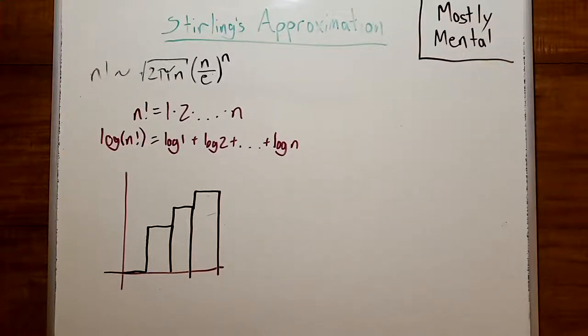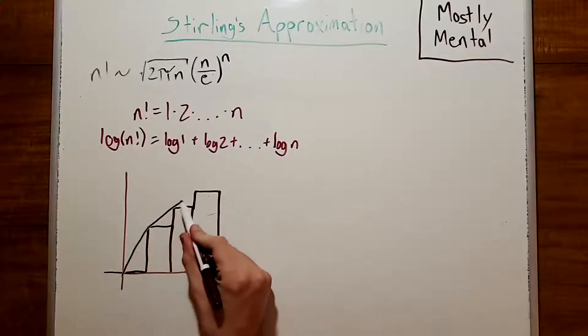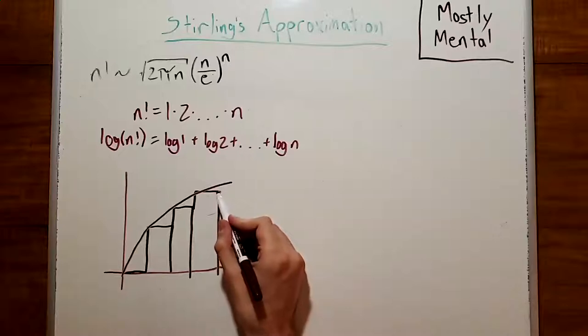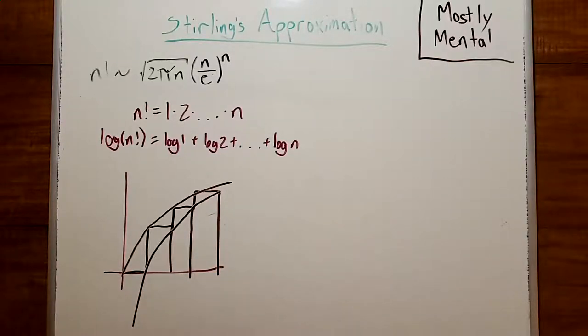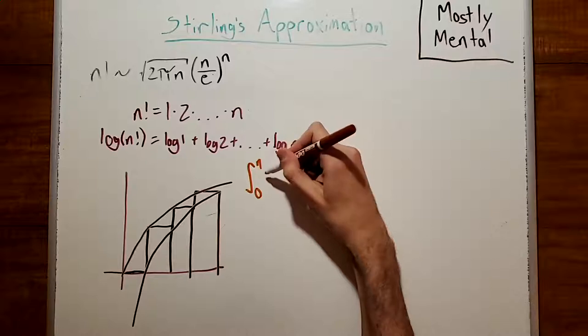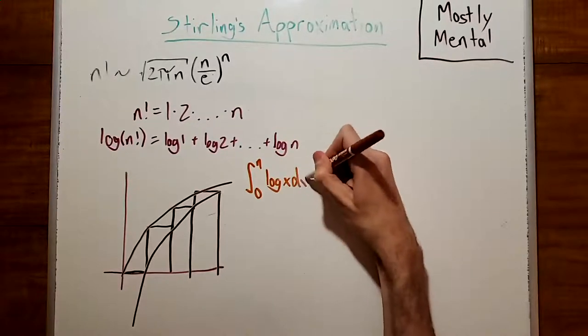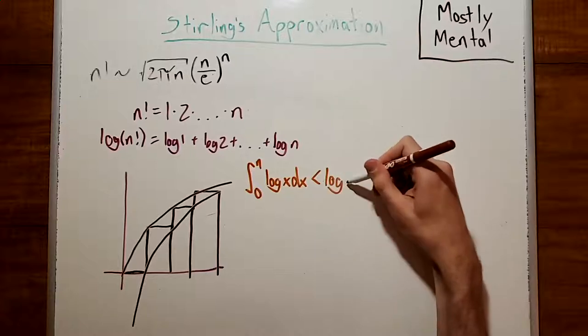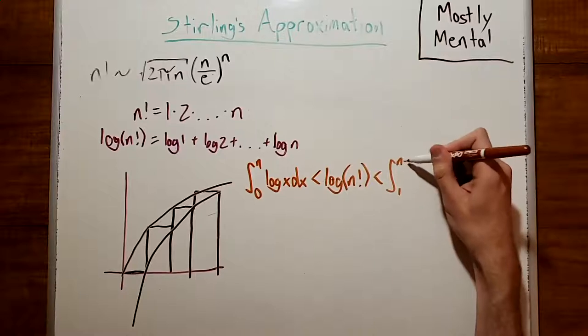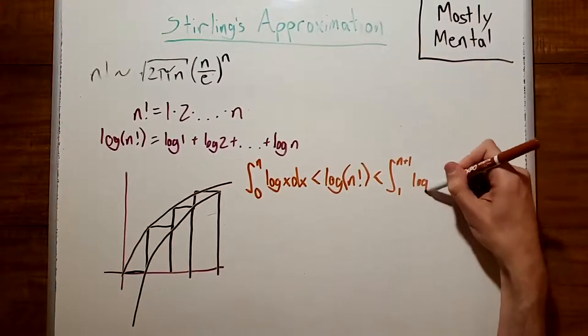Visually, this makes it pretty easy to get a bound. If we connect the dots on the left in a smooth fashion, that'll give us an upper bound. And if we connect the dots on the right, that'll give us a lower bound. Putting that into symbols, we get that the integral from 0 to n of log x dx is less than log of n factorial, which is less than the integral from 1 to n plus 1 of log x dx.